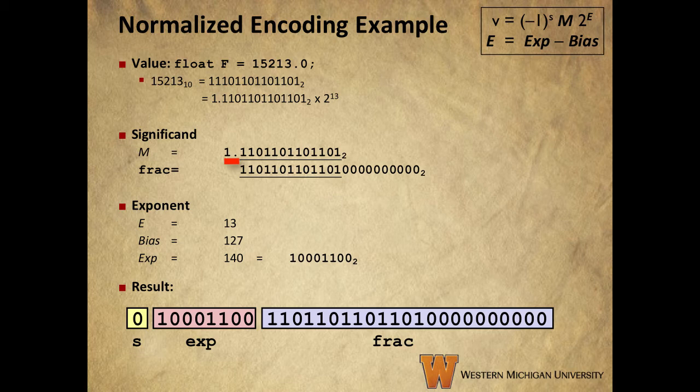Remember that we have an implied 1 point in front of our FRAC field, so for the M shown, the FRAC field will be encoded with everything to the right of the binary point. Now, we only have 13 digits for this particular number, and we have a FRAC field that is 23 bits long, so we just pad with zeros to the right to fill up our FRAC field.